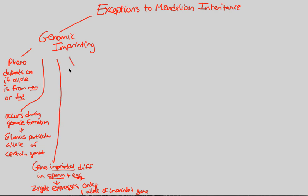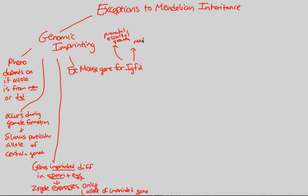The best way to understand genomic imprinting is through the classic mouse example. The mouse genome is very similar to ours, and we use mice because of the ethical implications of doing this in humans. The mouse gene we're looking at codes for IGF-2, insulin growth factor 2, a prenatal protein essential for growth. If you have functioning IGF-2, you grow normally. You need the dad to express IGF-2 within his sperm gamete for the developing embryo to have IGF-2 functioning normally.